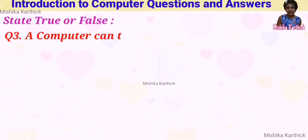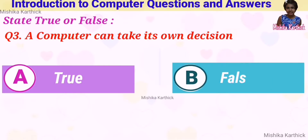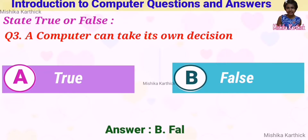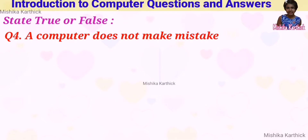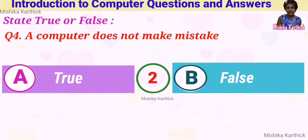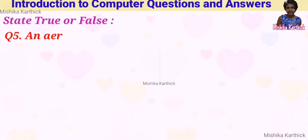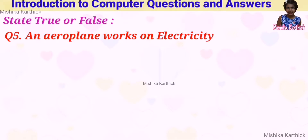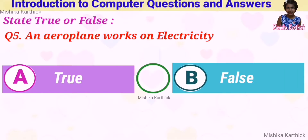Question 3: a computer can take its own decision. Answer: B. False. Question 4: a computer does not make mistakes. Answer: A. True. Question 5: an aeroplane works on electricity. Answer: B. False.